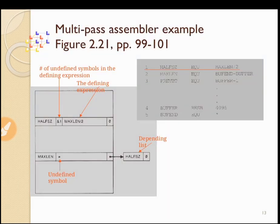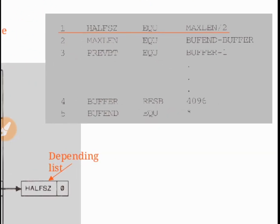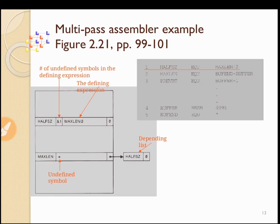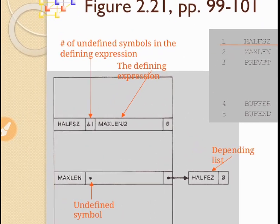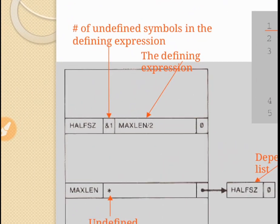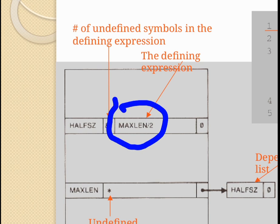Let us take an example. Looking at the first statement: half_size equals max_length divided by 2. In the symbol table, we store half_size along with the number of undefined symbols in the defining expression. The defining expression is max_length / 2, and the number of unknowns in this expression is 1, so we have undef-count = 1.